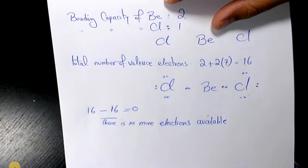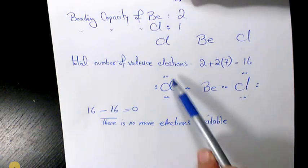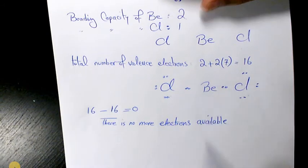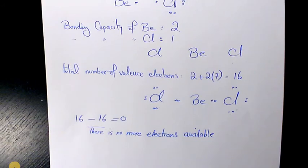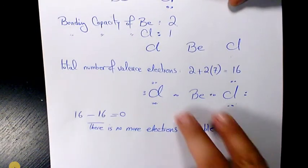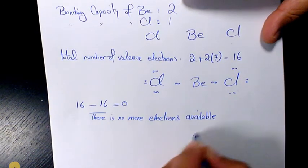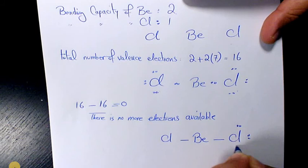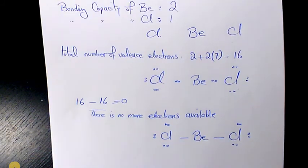Now we check the octet rule. For chlorine: two, four, six, eight — it has an octet. The other chlorine also has an octet. But for beryllium, you only have two and four, so it is under octet. There is an exception for beryllium and boron — these two elements perform with an incomplete octet. So we leave it as is, with beryllium having a single bond with each chlorine and lone pairs placed around the chlorines. That's the Lewis structure of beryllium chloride.